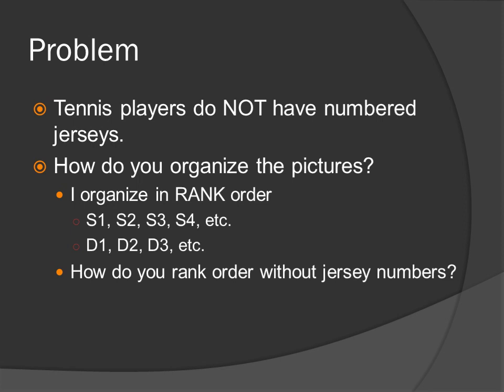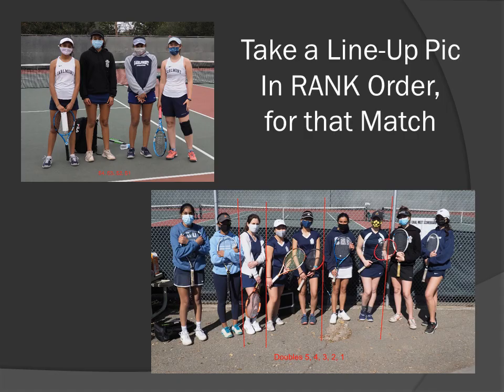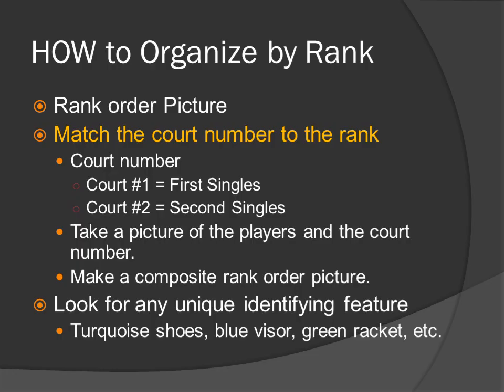How do you rank order without jersey numbers? You take a rank order picture. Remember the picture we talked about before? They're in rank order. Look at the red text at the bottom of the picture — it shows you their rank number. If you can't get that, you match the court number to the rank. For instance, court number one is first singles, court number two is second singles. Take a picture of the player and the court number — hopefully there is a court number behind the court.